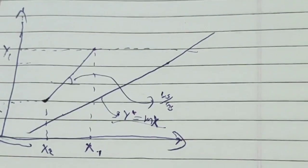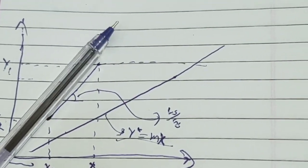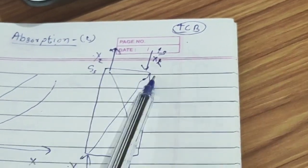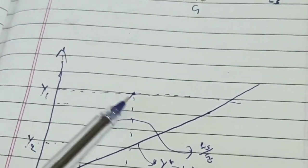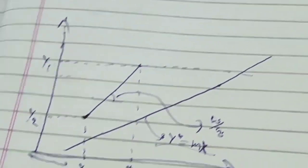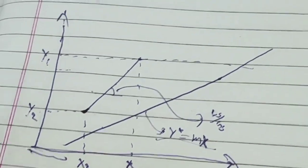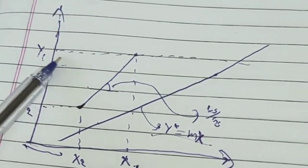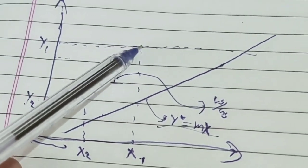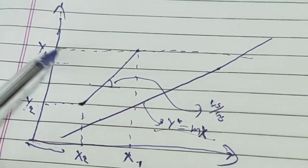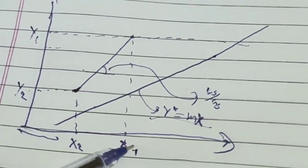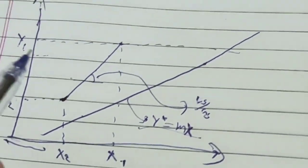The operating line has a slope of LS over GS. It starts from the point X2 comma Y2 at the top, and this is our bottom point. The value Y1 is already specified because the incoming gas has a particular composition. Based on Y1 and Y2 you design the column. This point is fixed, so the operating line must start from this point and end where it cuts the Y equal to Y1 line.